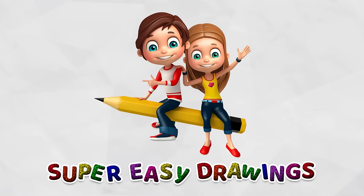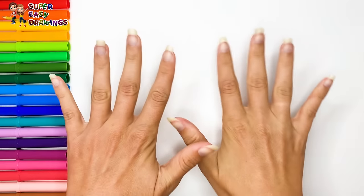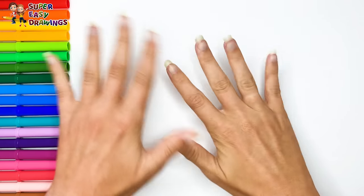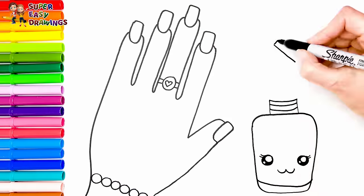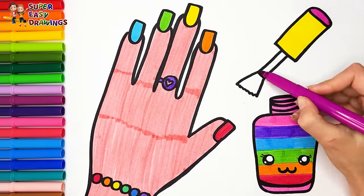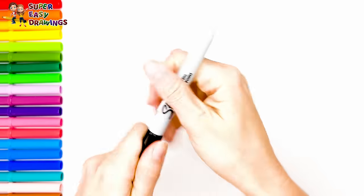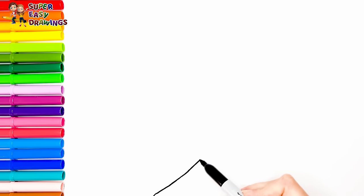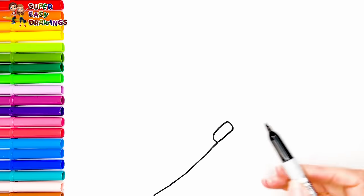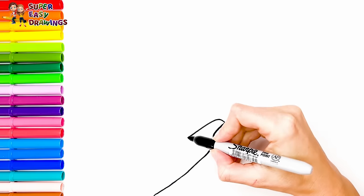Super Easy Drawings. Hello everyone and welcome to the Super Easy Drawings channel. Today we are going to draw and color a hand with rainbow nail polish. Let's start drawing. First let's draw a nice hand. Draw all the fingers with beautiful nails.